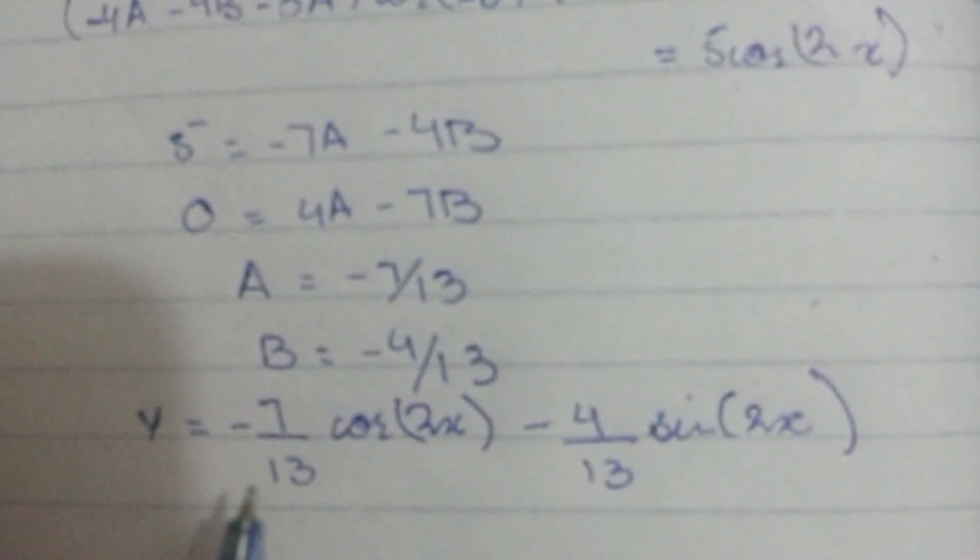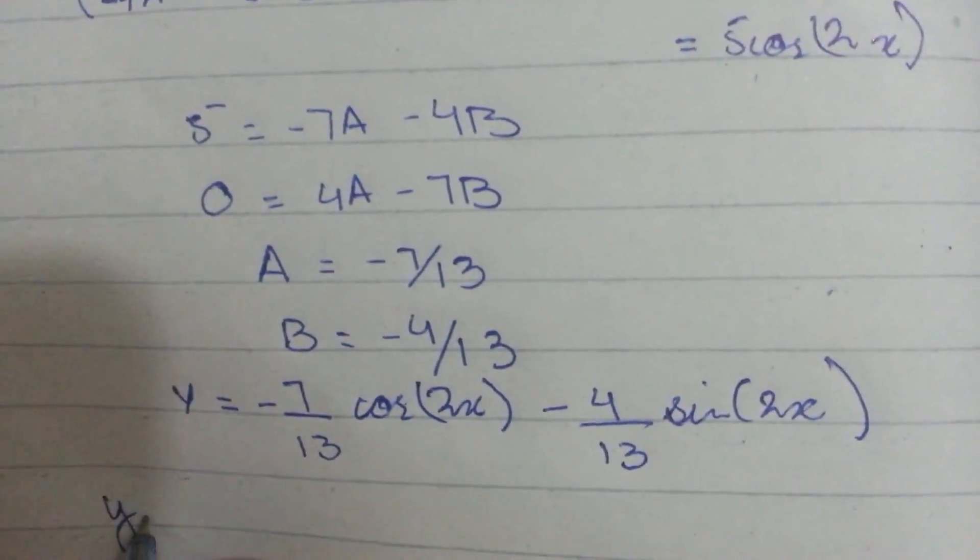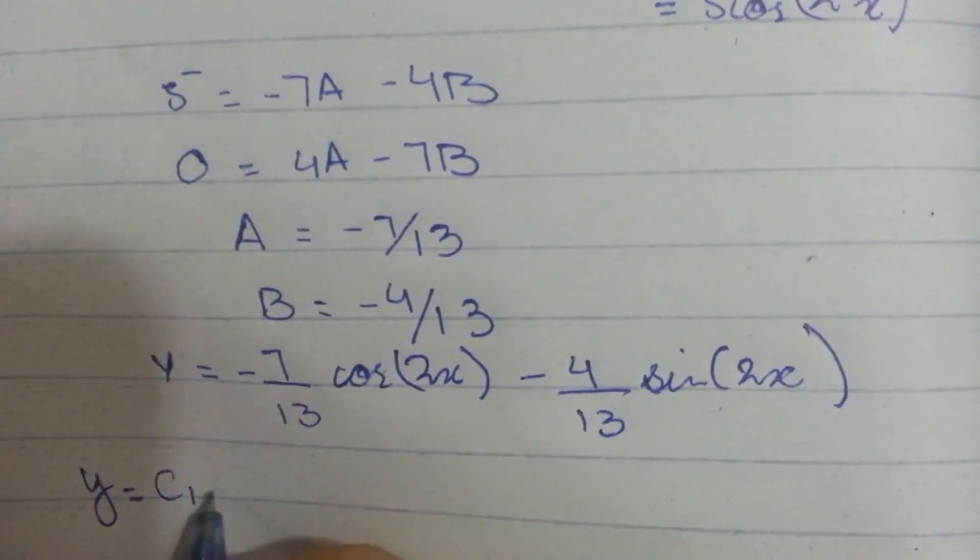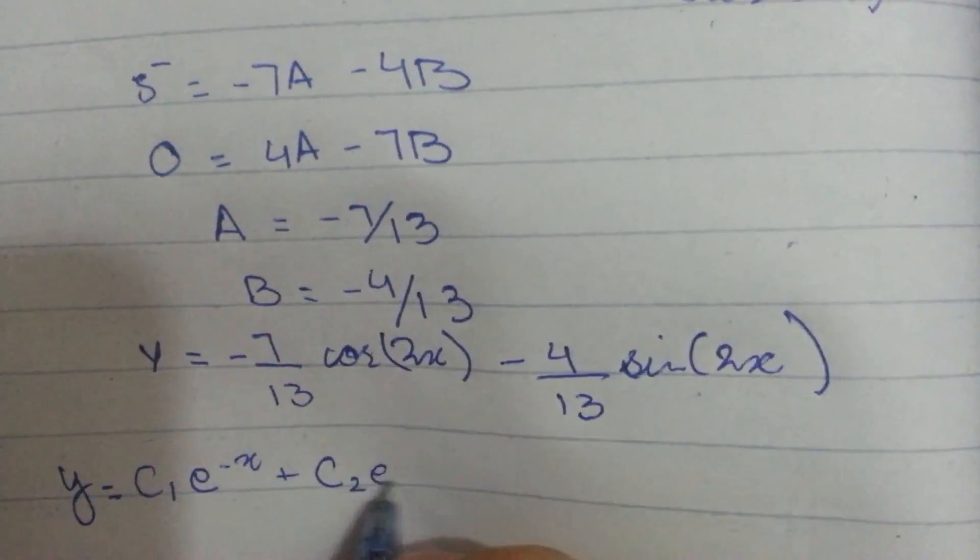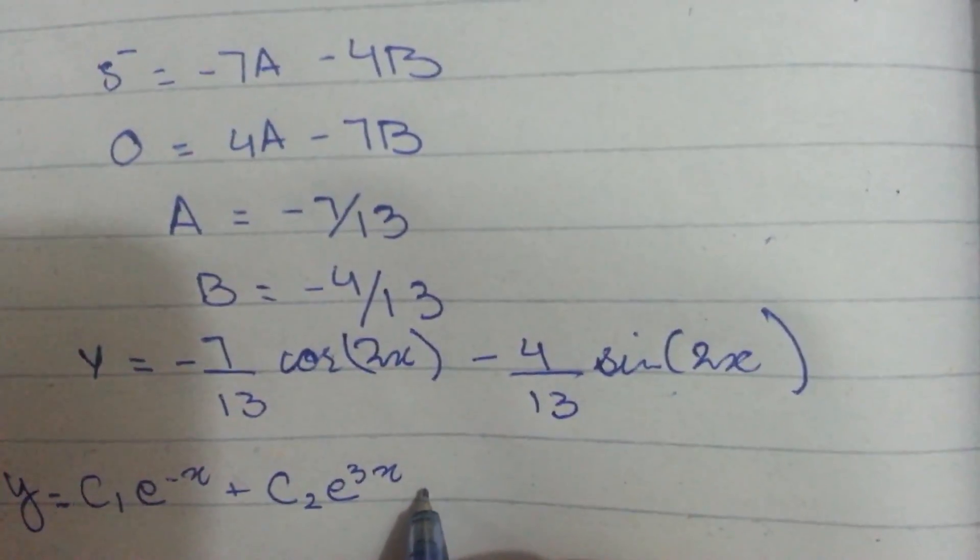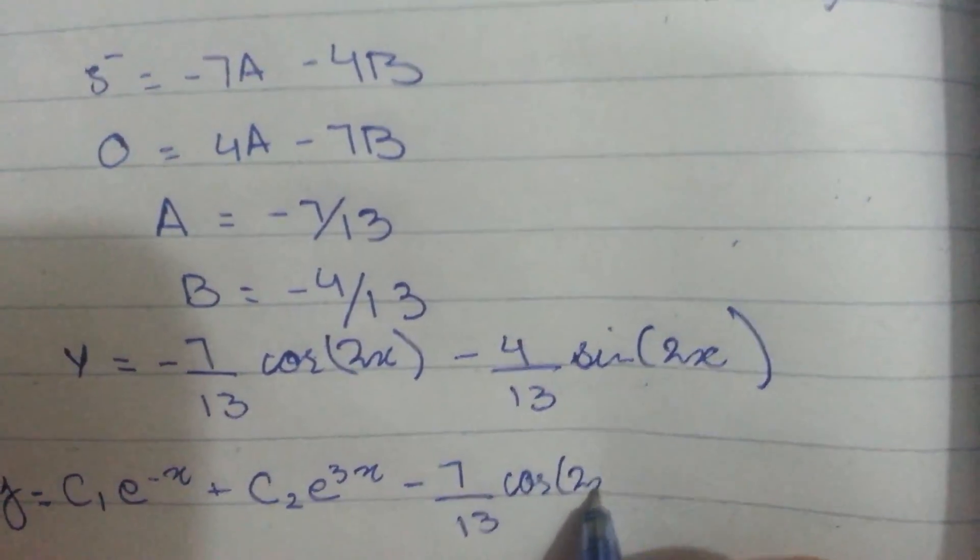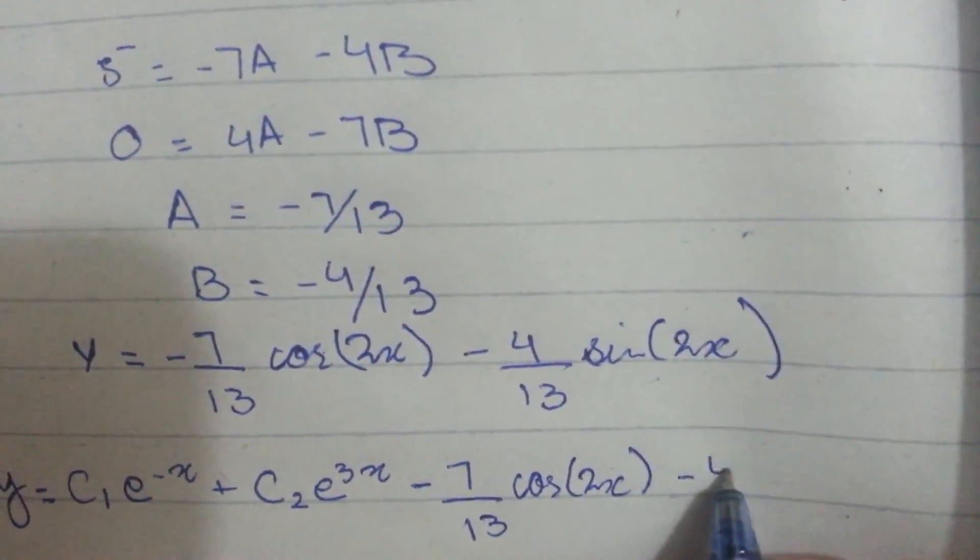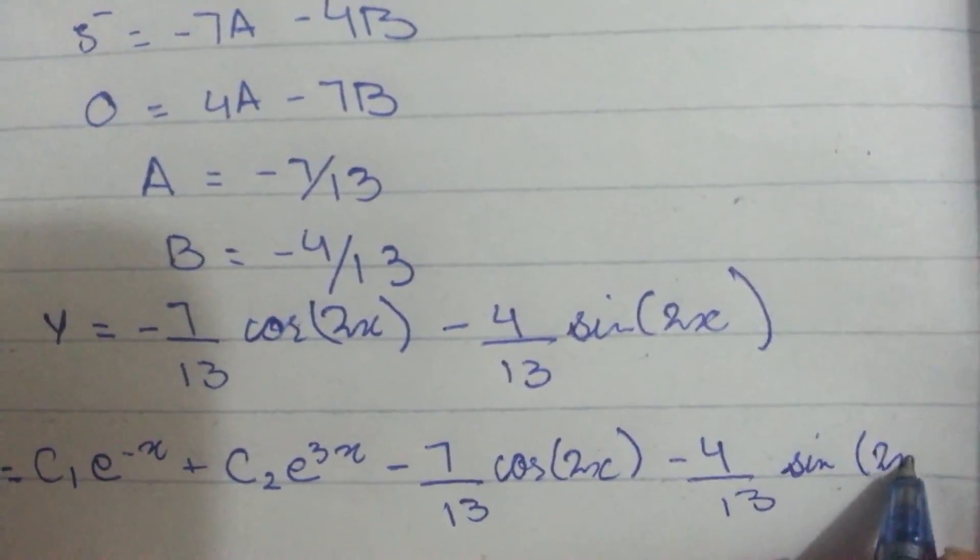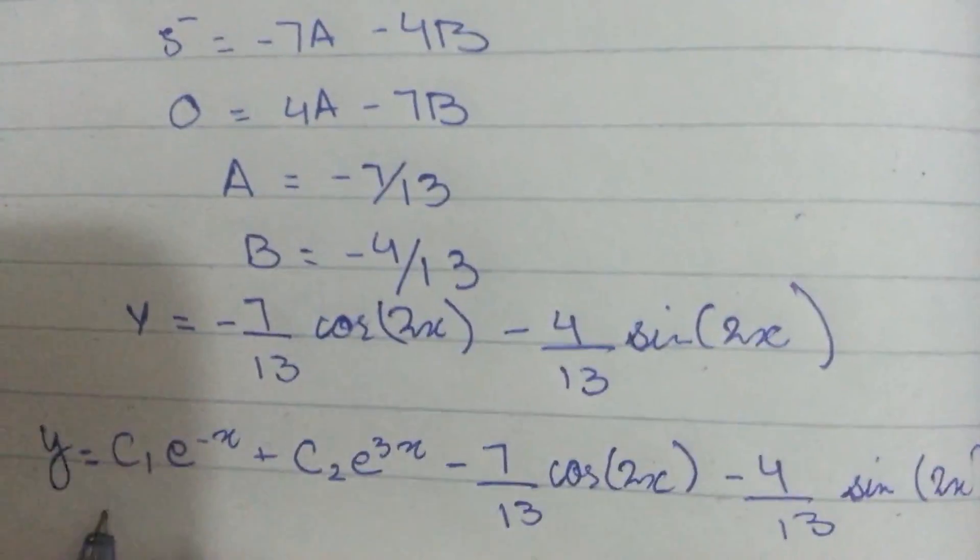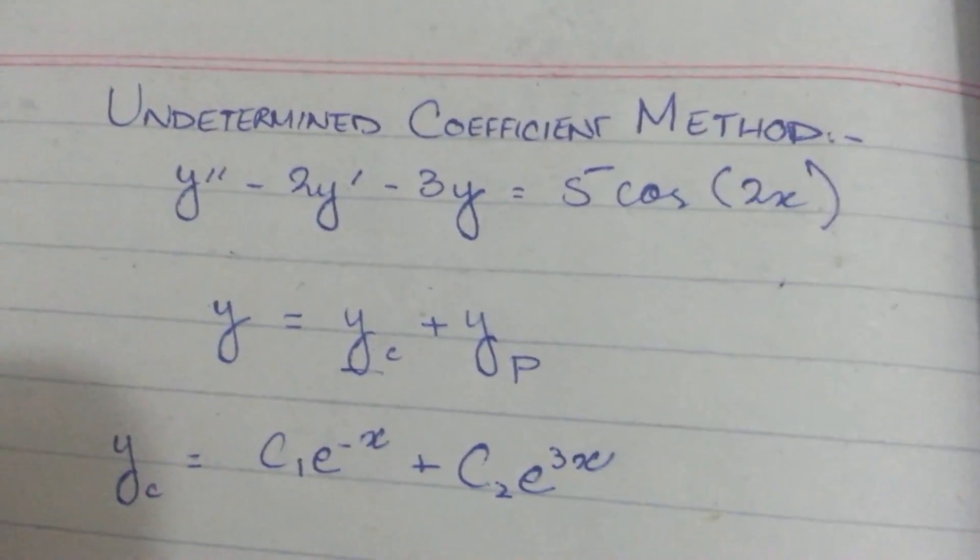After substituting the values we will get this. Now as y is equal to yc plus yp, we will put yc which is c1 e to the minus x plus c2 e to the minus 3x plus yp which is minus 7 by 13 cos 2x plus minus 4 by 13 sin 2x. So this is the answer of this differential equation with undetermined coefficient method.